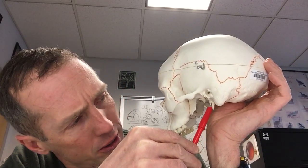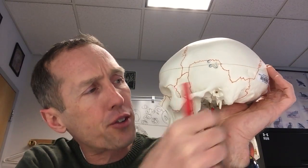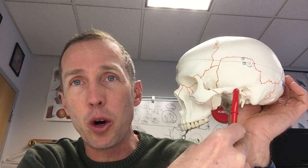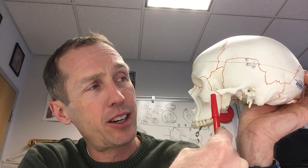We also have our styloid process, which looks like a stylus, and it's going to anchor a lot of your tongue muscles. Extending anteriorly, we've got our zygomatic process. The zygomatic process of the temporal bone is going to articulate with the temporal process of the zygomatic bone.